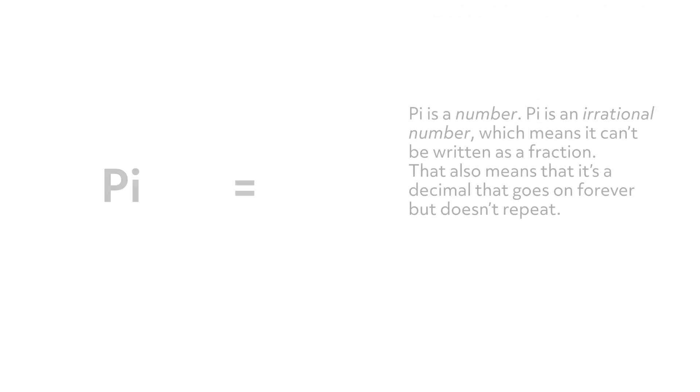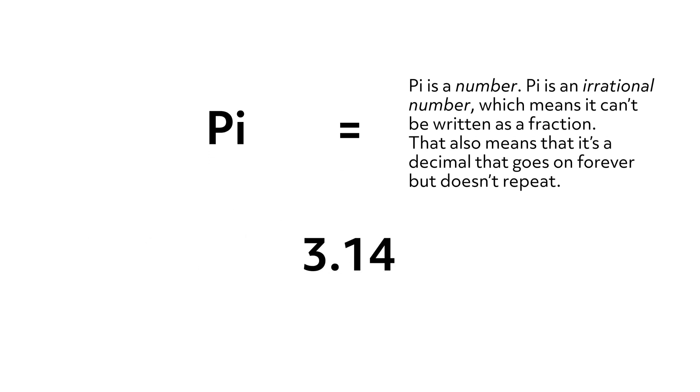Finally, we need to define pi. Pi is a number. We sometimes use 3.14 as an approximation of pi, since that will get us close to the real answer. The reality is that pi is an irrational number, which means it can't be written as a fraction. That also means that it's a decimal that goes on forever but doesn't repeat. So whenever we use 3.14 or even that pi key on a calculator, we're using an approximation of pi, and our answer will also be an approximation.